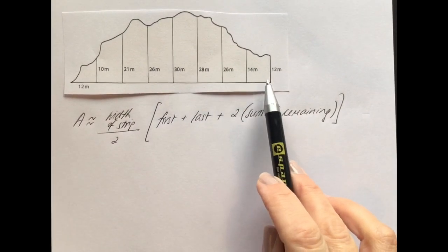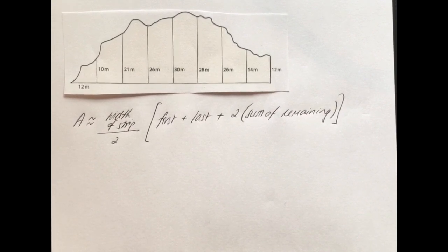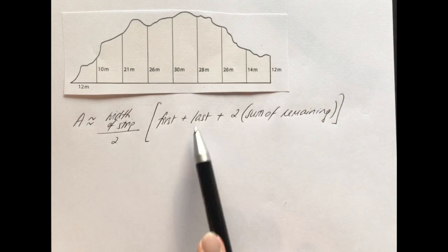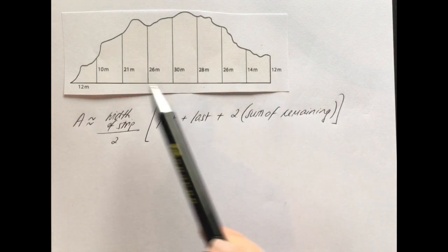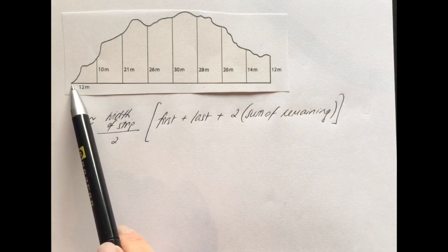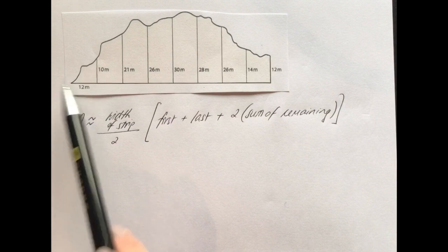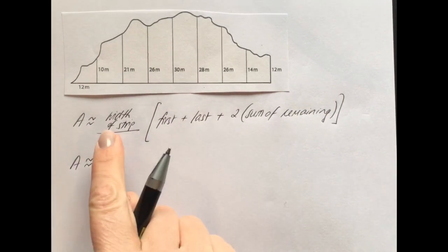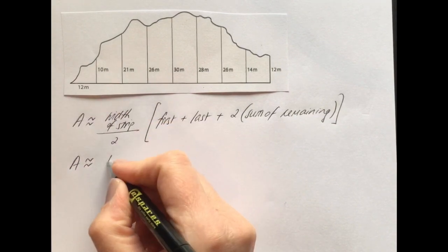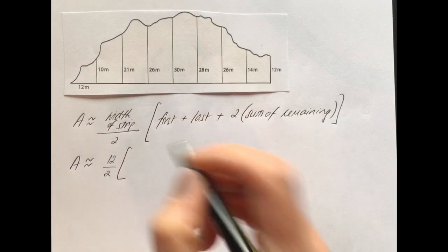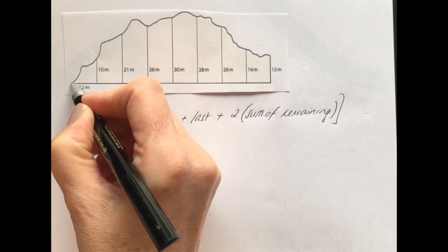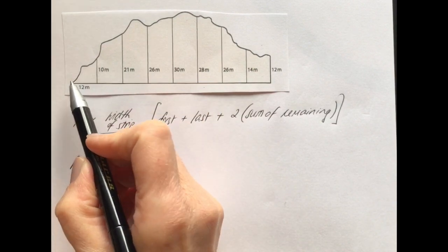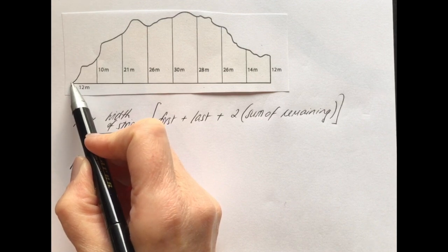Let's get the area of this plot of land using the trapezoidal rule. I've written out the trapezoidal rule in my more user-friendly way. Now I'm going to fill in all the bits of information. This shape is slightly different to the previous one because of the way it's starting off - watch out for that. The width of the strip is 12, so 12 over 2, then open the square bracket.